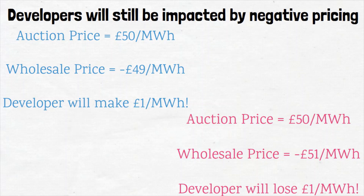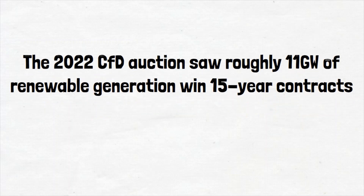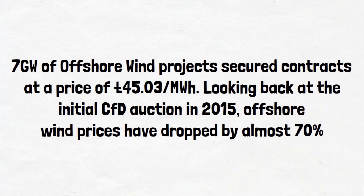The 2022 CFD auction saw roughly 11 gigawatts of renewable generation win 15-year contracts. Offshore wind in particular was successful, with 7 gigawatts of offshore wind projects securing contracts at the 2021 price of £45.03 per megawatt hour. Looking back at the initial CFD auction in 2015, offshore wind prices have dropped by almost 70%, highlighting the significant advances in the development of these projects and the subsequent reduction in costs to build them.